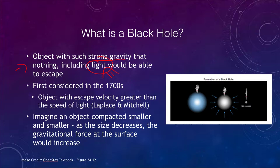and there are no other forces involved, then you would be able to escape. If you're traveling at a slower speed, it would not be possible. These ideas were actually considered as far back as the 1700s. We had the concept of a black hole as just an object with an escape velocity greater than the speed of light. Those were proposed by Laplace and Mitchell, two different astronomers and scientists of the time, long before an understanding of general relativity.